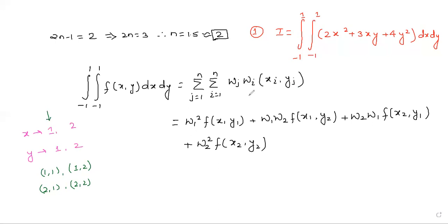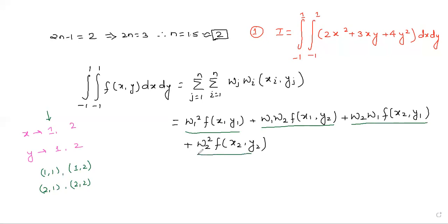So we have expanded the equation and written: w1²·f(x1,y1) + w1·w2·f(x1,y2) + w1·w2·f(x2,y1) + w2²·f(x2,y2). Note that w2·w1 equals w1·w2 since it is just multiplication. We need to find each individual value, add all four together, and that gives us the result of the integral.